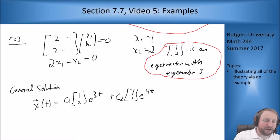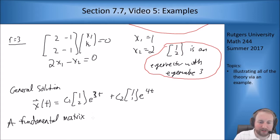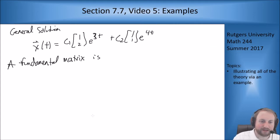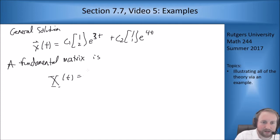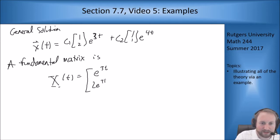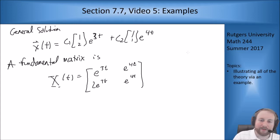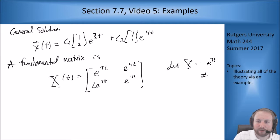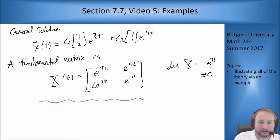A fundamental matrix comes from stacking the solution vectors into a matrix: X(t) = [[e^(3t), e^(4t)], [2e^(3t), e^(4t)]]. The determinant of X is negative e^(7t), which is never zero, so this is indeed a fundamental matrix for our system and the Wronskian check works out. This is the answer to part A.